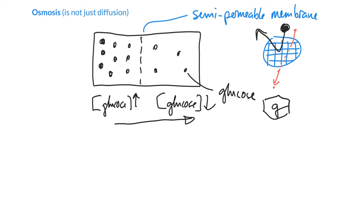They hit the membrane and they're just too fat to get through — they can't squeeze through. The ones on the other side can hit the membrane too, but again they can't move through. So those large molecules — and this is almost always the solute, by the way — the solute can't get through the semipermeable membrane.